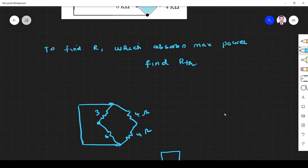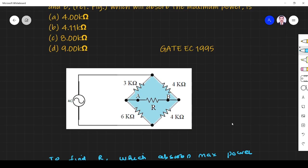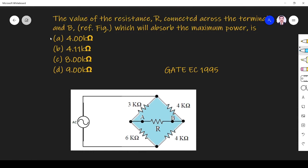So 4 ohm. So the answer is the value of R should be equal to 4 ohm. Option A is the right answer. Thank you.